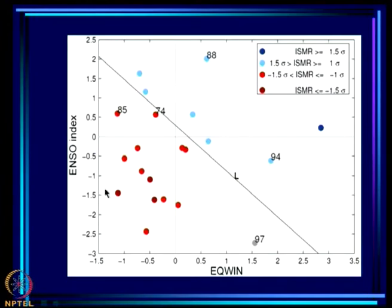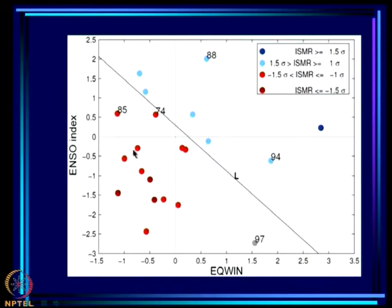If we look at both indices — EQUINOO and ENSO — there is a clean separation. The reason 1994 was an excess is because EQUINOO was so large and positive, and similarly 1997 was a normal year because EQUINOO was large and positive despite the highly unfavorable El Niño. In the phase space of both indices, droughts and excess monsoon years are well separated. If the forecast point is below a dividing line, the probability of excess rainfall is zero; above it, the probability of drought is zero.